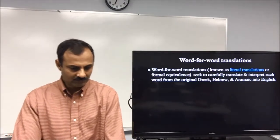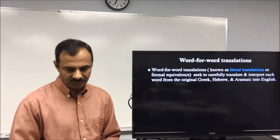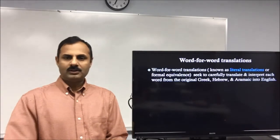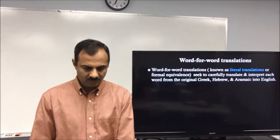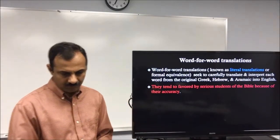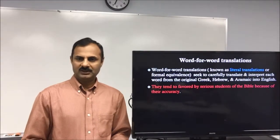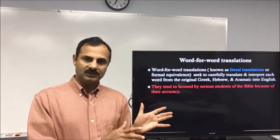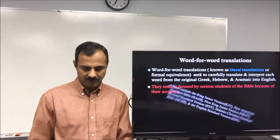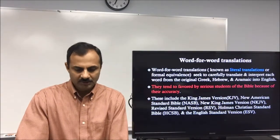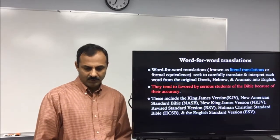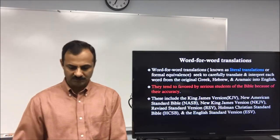In word-for-word translations — also known as literal translations or formal equivalents — the goal is to carefully translate and interpret each word from the original Greek, Hebrew, and Aramaic into English. These tend to be favored by serious students of the Bible because of their accuracy. Every word is translated for accuracy. These translations include the King James Version (KJV), New American Standard Bible (NASB), New King James Version (NKJV), Revised Standard Version (RSV), Holman Christian Standard Bible (HCSB), and the English Standard Version (ESV).